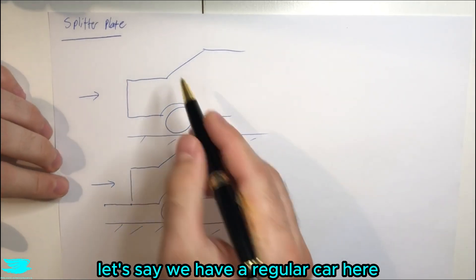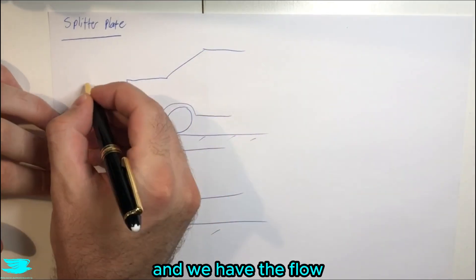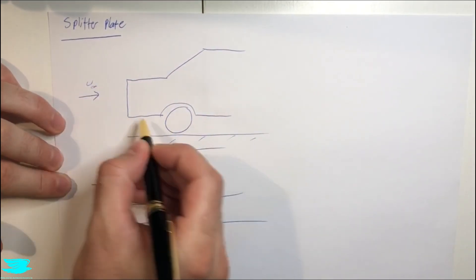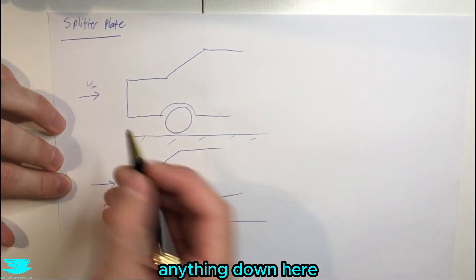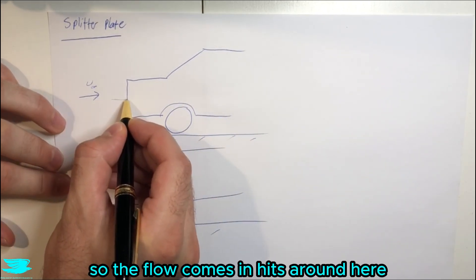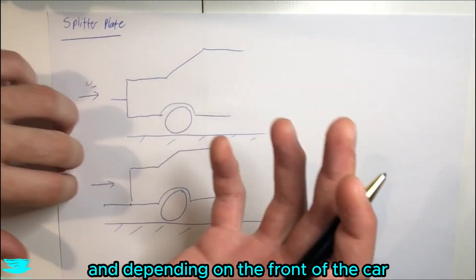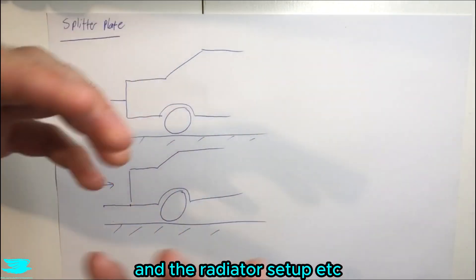So a splitter plate to begin with is, let's say we have a regular car here, this is the front, and we have the flow coming in at U-Infinity, and it comes in and a regular car doesn't have anything down here. So the flow comes in, hits around here, and depending on the front of the car and the radiator setup, etc.